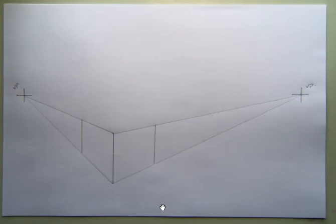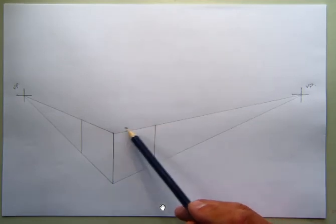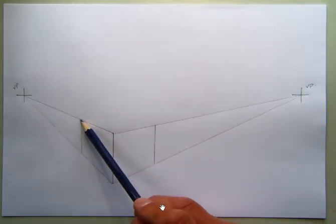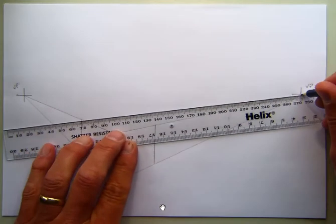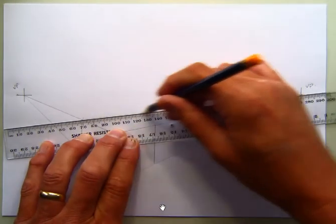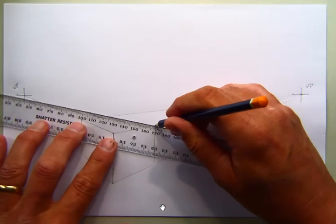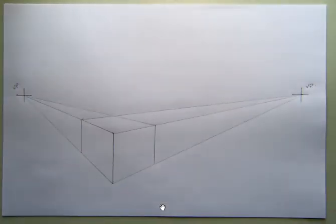So what I've now got is two sides of the cube and to complete the top I'm going to draw a line from this point here to the vanishing point and from this point here to the vanishing point. So once I've done that I should have a completed cube. So just do that and that and once I've done that you can see that I have my cube.